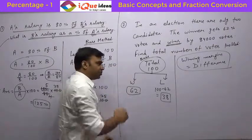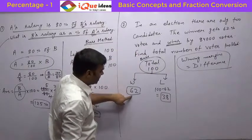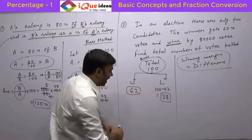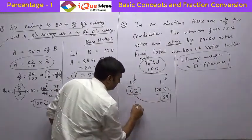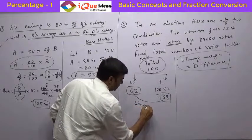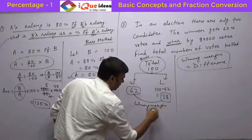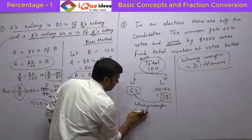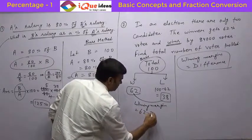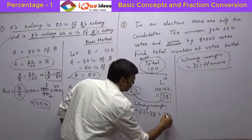Same goes in the elections also. If the winner has got 62 and the loser has got 38, then what is the winning margin? The winning margin from here is equal to 62 minus 38, 62 minus 38 is 24.